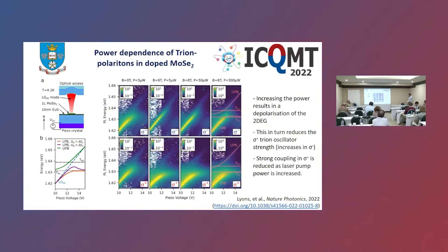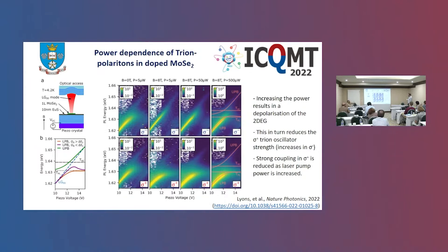Thanks to the depolarization mechanism seen in the bare flake, we increase the pump power in the cavity. At zero Tesla, both modes are exactly the same. When magnetic fields are introduced, the cavity mode travels straight through our resonance in sigma-minus, while in sigma-plus it opens up to a maximum. As we increase the power, due to this depolarization mechanism, a Rabi splitting starts to open up in the sigma-minus polarization and slightly decreases in the sigma-plus. By about 500 microwatts, they start to tend back towards equal states between the two polarizations.